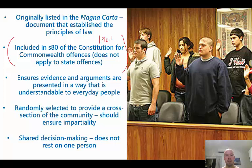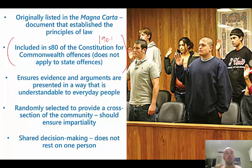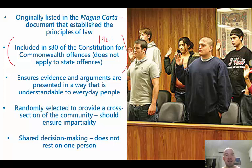Imagine if you're an accused person and there's no jury — it's just legal minds deciding. You could sit there for the whole trial and not know what's going on. So the jury helps with accessibility in terms of the language of the courtroom. It means there should be a cross-section of the community because it's randomly selected, meaning the jury should be impartial. The idea of shared decision-making means that if someone has a bias against the accused, a panel of people talking about it should call that out, whereas a single judge might be biased. Having a jury is meant to make things more accessible, fairer, and ensure it's your peers judging you.